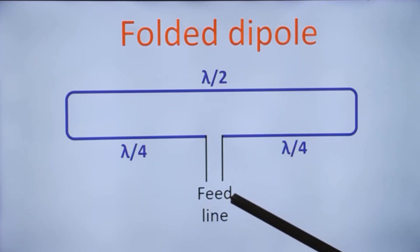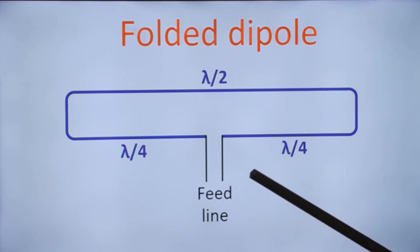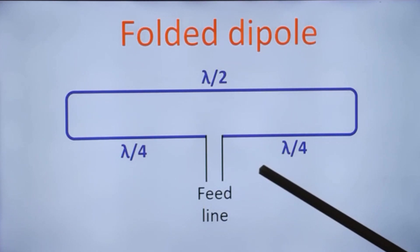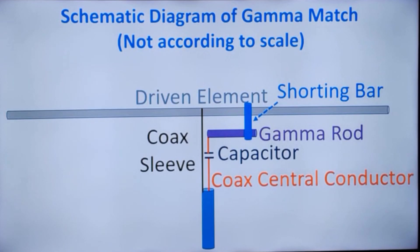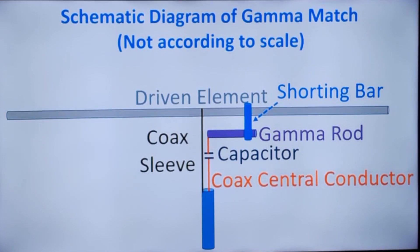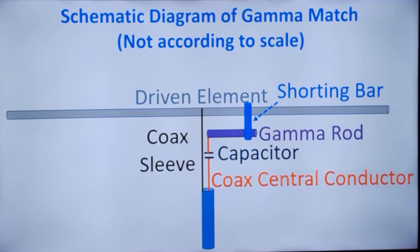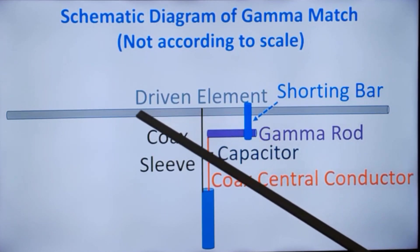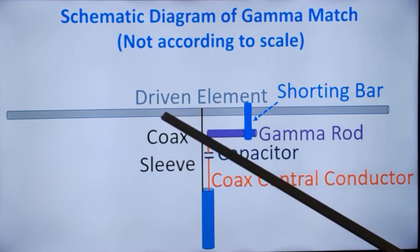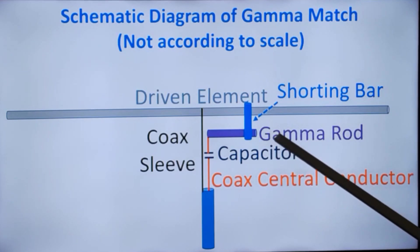That is the difference between a folded dipole and a simple half wave dipole. Now you would have heard of gamma match when you implement a connection between a coaxial cable and the driven element of the Yagi antenna. The schematic diagram is shown here. The advantage of using the gamma match is that you can use a full half wave length driven element.